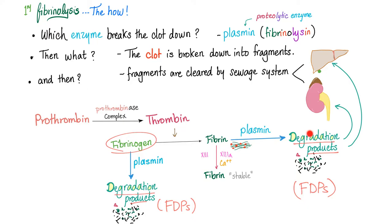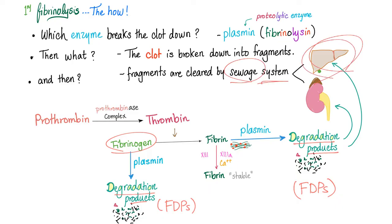Why not just break the fibrin? Because if you leave fibrinogen and there is thrombin, thrombin is going to convert fibrinogen into fibrin, forming another clot. We need to destroy this fibrin and anybody related to the fibrin. These fragments are then cleared by the liver and the kidney.